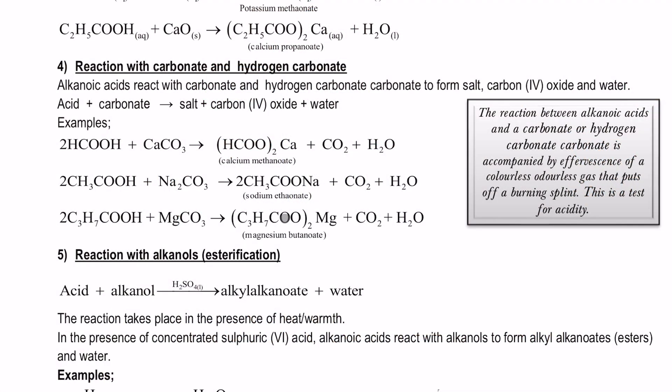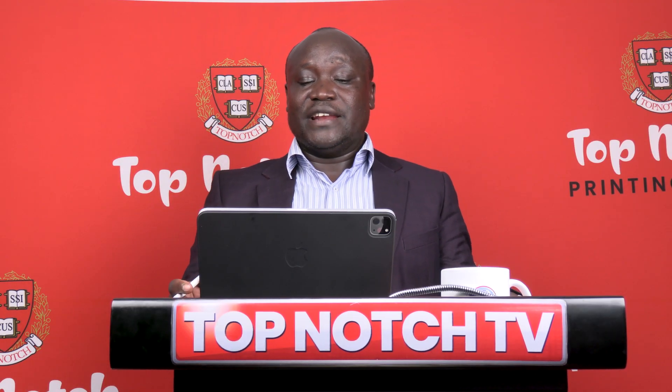The observation made when you add a carbonate or hydrogen carbonate to a carboxylic acid is effervescence of a gas that turns limewater milky — a white precipitate — and can extinguish a burning splint. That gas is carbon dioxide. This means that during practicals, when you are given an organic substance, you can identify that it contains a –COOH functional group by adding sodium hydrogen carbonate and observing the formation of bubbles.